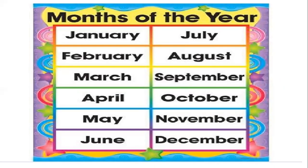Next, months of the year. First is January — J-A-N-U-A-R-Y, January. F-E-B-R-U-A-R-Y, February. M-A-R-C-H, March. A-P-R-I-L, April. M-A-Y, May. J-U-N-E, June. J-U-L-Y, July.